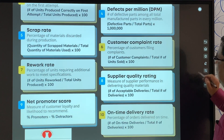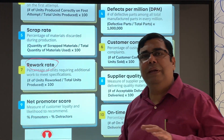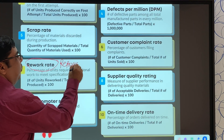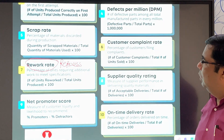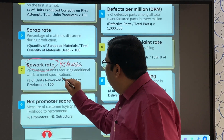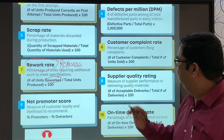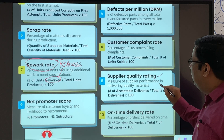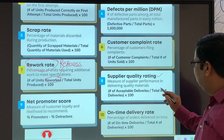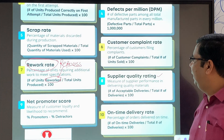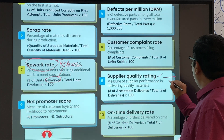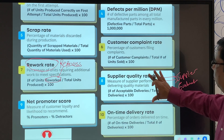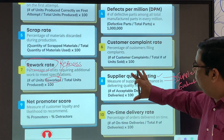The seventh KPI is rework rate. Most companies do not allow rework, so you can consider this as reprocess rate. It is the number of units reprocessed or reworked divided by total units produced. The eighth KPI is supplier quality rating — a measure of supplier performance in delivering quality materials. It is calculated as acceptable deliveries divided by total deliveries, multiplied by 100. This can be used for supplier evaluation, giving more weightage in the evaluation process.